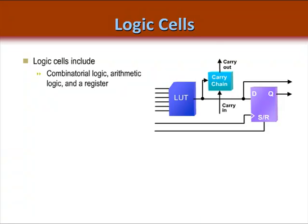Each Vertex 5 CLB has two slices. Each slice has four LUTs and four flip-flops. Basically, this diagram is replicated four times to make a single slice. That means that each Vertex 5 CLB has eight slices.